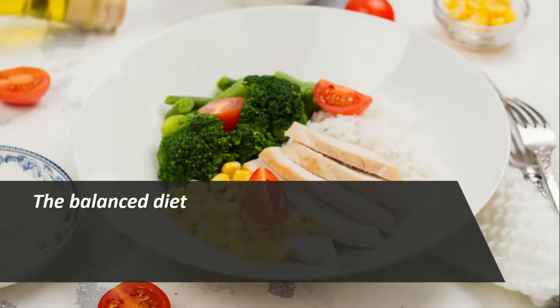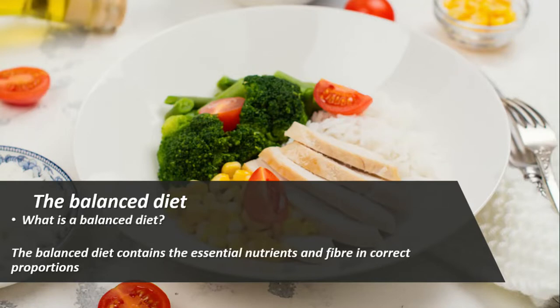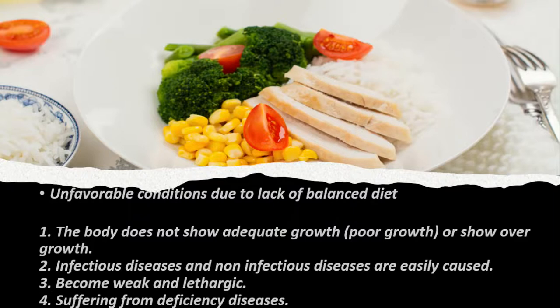The last point is the balanced diet. A balanced diet contains all essential nutrients and fiber in the correct proportions. There is a diagram called the food plate that shows the correct proportions you should consume. Without a balanced diet, the body may not show adequate growth or may show overgrowth. Infectious and non-infectious diseases are easily caused, and you can become weak, lethargic, and suffer from deficiency diseases.